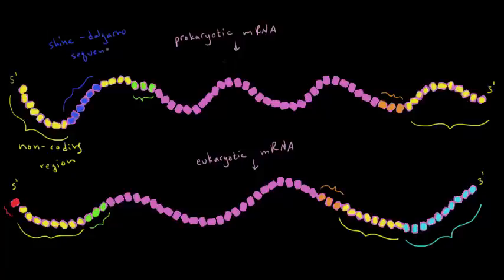And the Shine-Delgarno sequence is the site that the ribosome is going to recognize and bind to. So let's just do a ribosome right over here. This is where the prokaryotic ribosome is going to bind. And then after the Shine-Delgarno sequence we have another non-coding region. I'm just going to abbreviate it NCR.